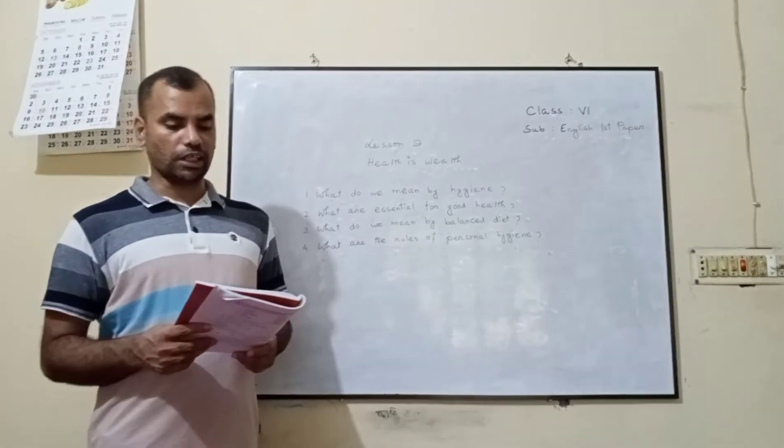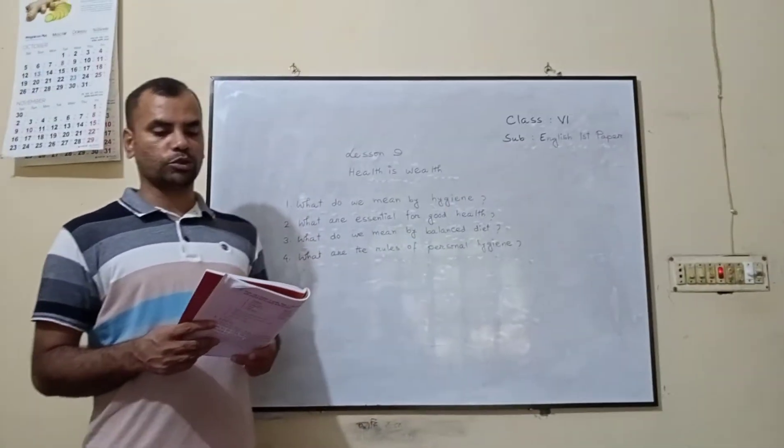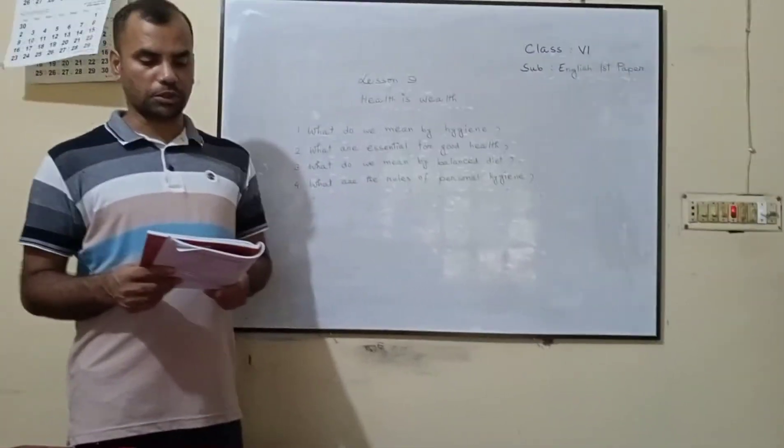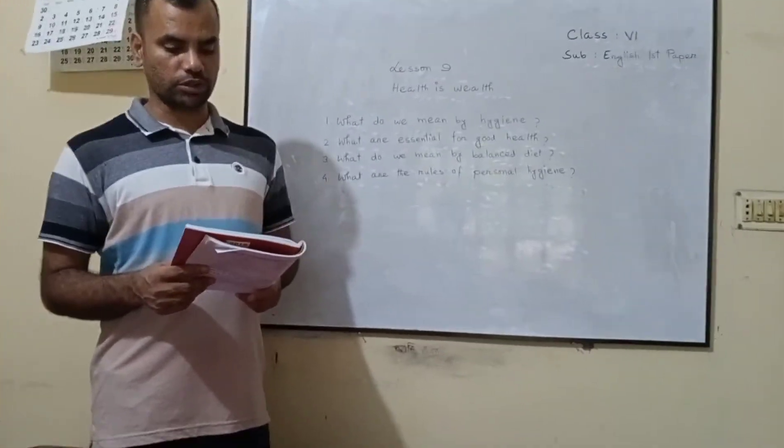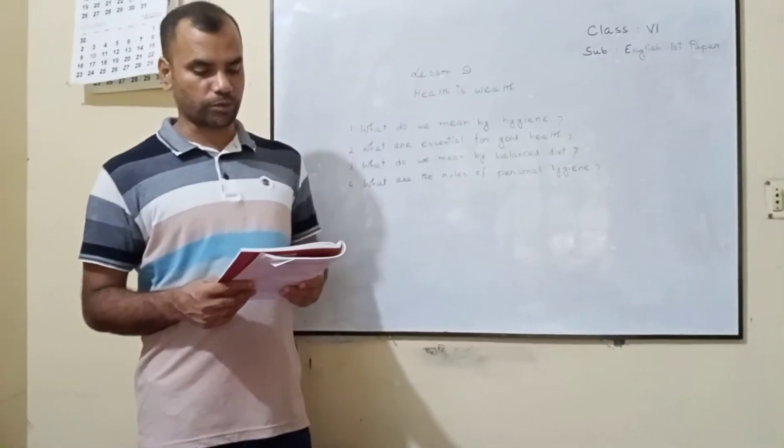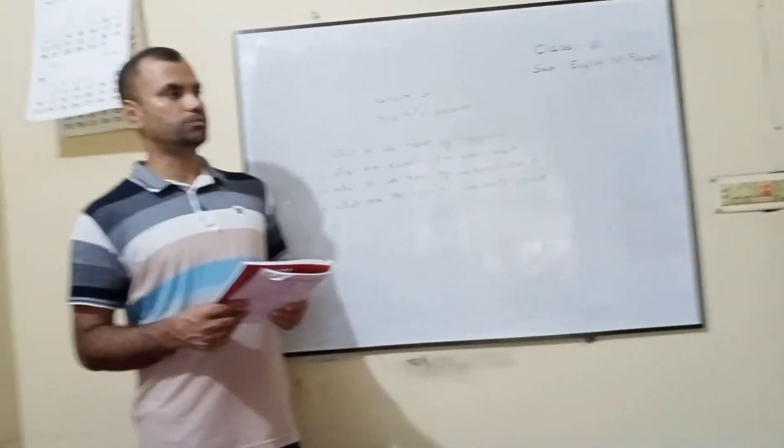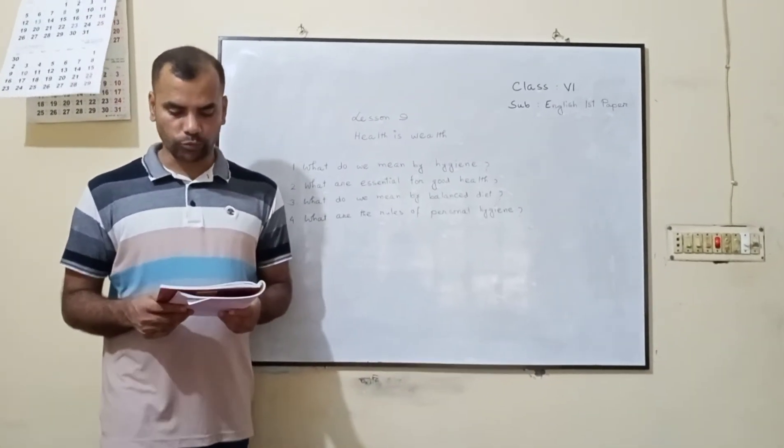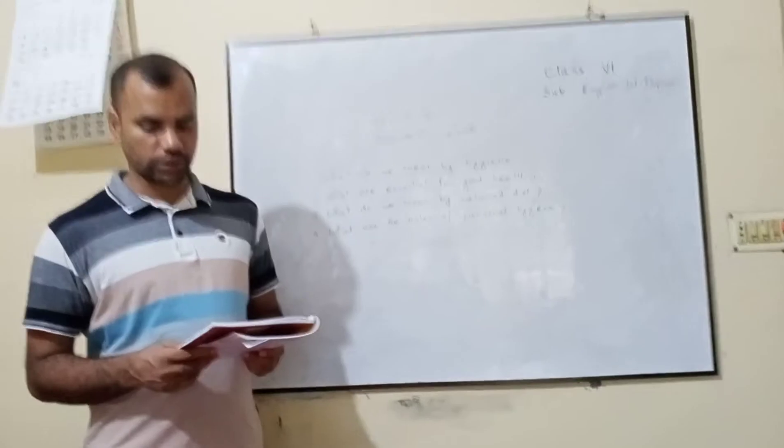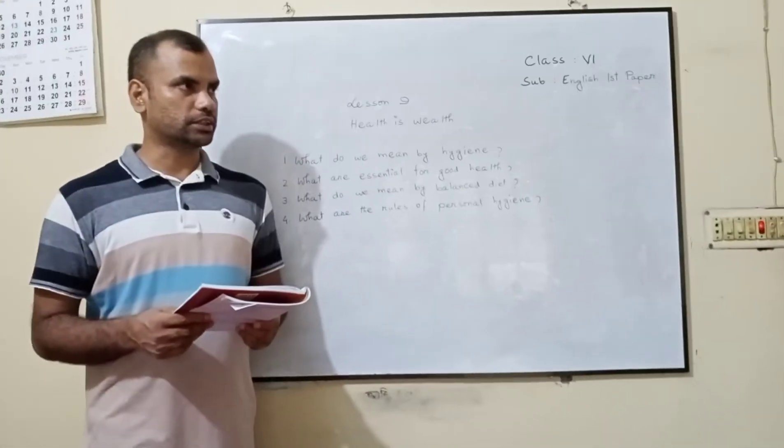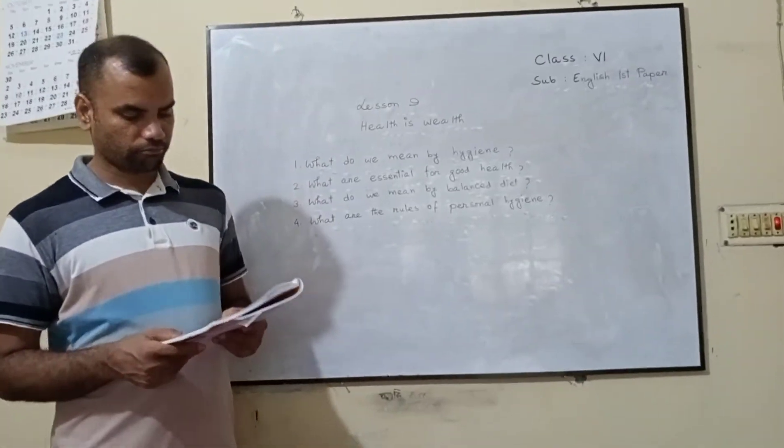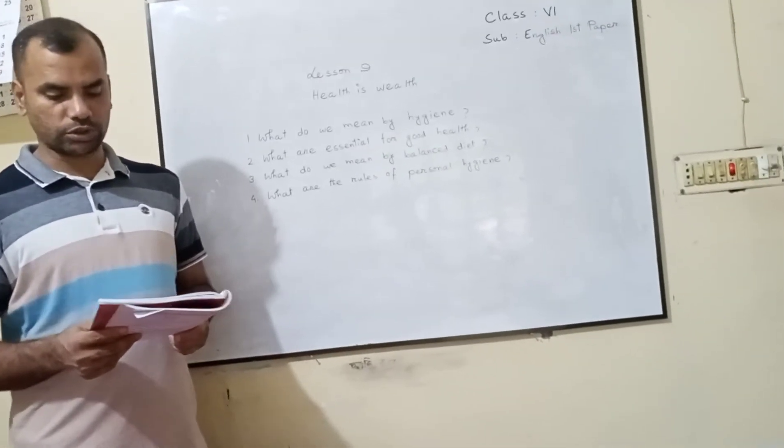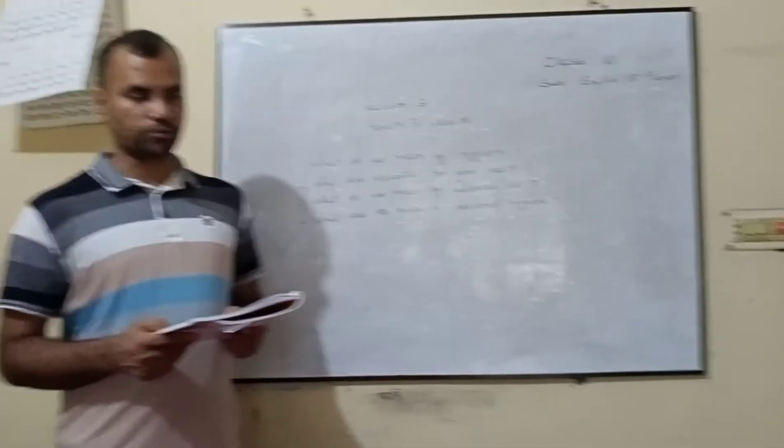Number 9, cleaning household. We should keep our household and environment clean. Number 10, taking clean food and water. Our food should be fresh, clean and properly cooked and water should be pure. Number 10, taking regular exercise. We should take part in games and sports and take physical exercise regularly. Number 10, taking regular sleep and rest. We should sleep properly and take proper rest.